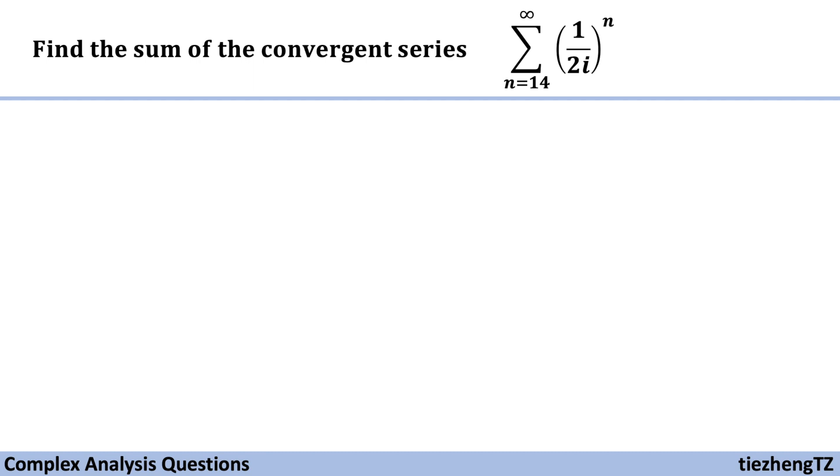The question is to find the sum of the convergent series 1 over 2i to the power of n from n=14 to infinity. It's a little bit tricky because n is starting from 14 to infinity, but first of all we need to normalize.